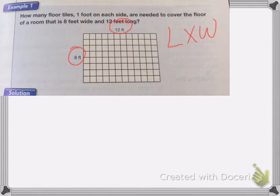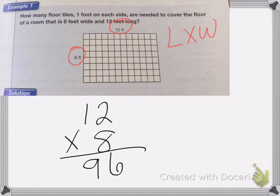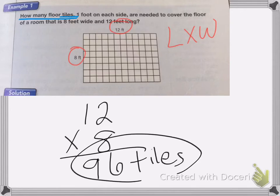So to do that, we're going to do 12 times 8. So 12 times 8 is 96. And our label on this one is going to be tiles, because it's asking how many floor tiles. So we're going to say 96 tiles, and that will be our answer.